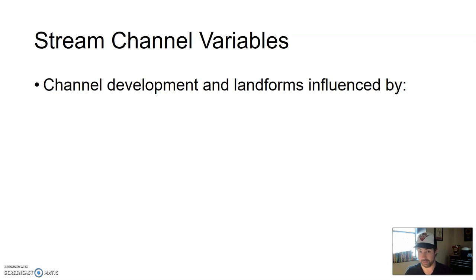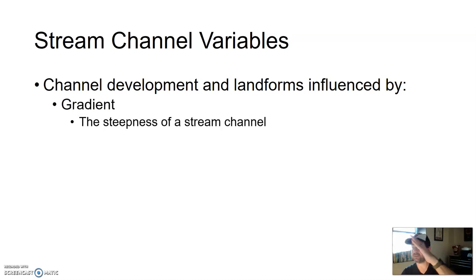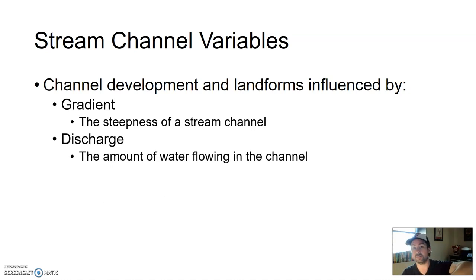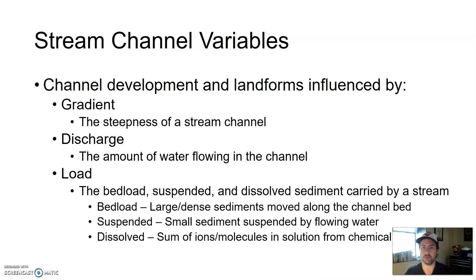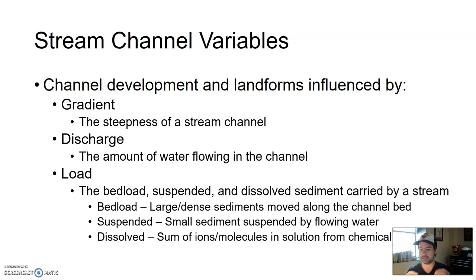The type of stream channel, how it's created, and the landforms that result are influenced by three factors: gradient — the steepness of the stream channel; discharge — how much water is flowing in that channel by volume; and load — all the material in the water other than just the water itself. Load includes bed load, which is large dense sediment moving along the bottom; suspended load, which is small sediment suspended in the flowing water, making some rivers look brown and muddy; and dissolved sediment, which is the sum of all ions and molecules in solution from chemical weathering.